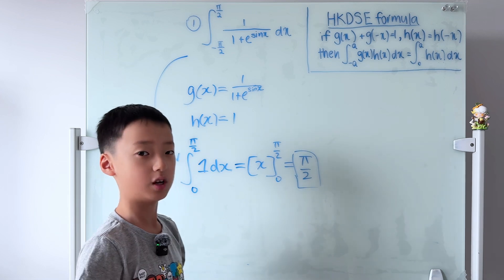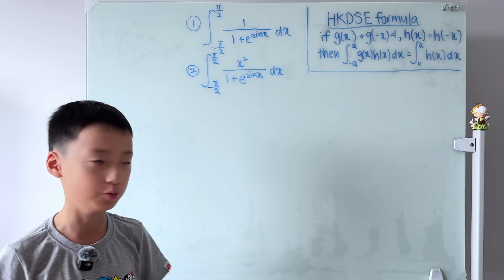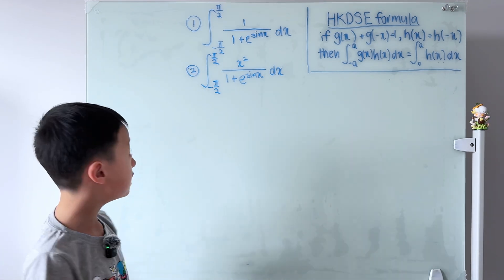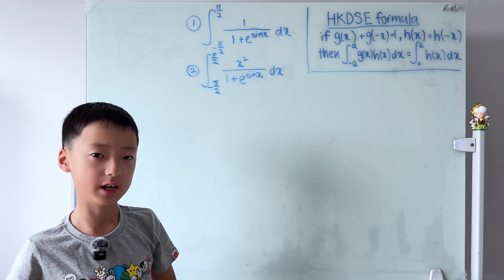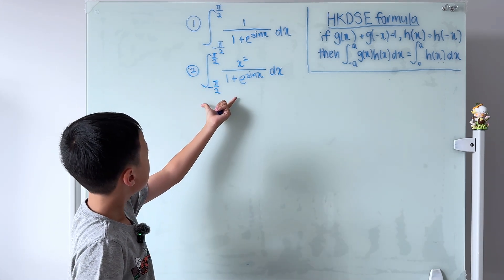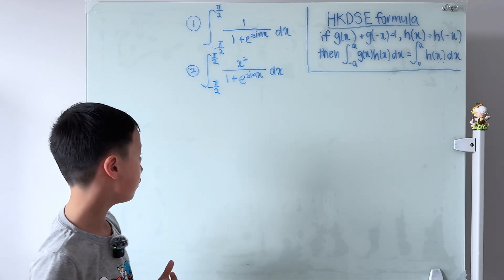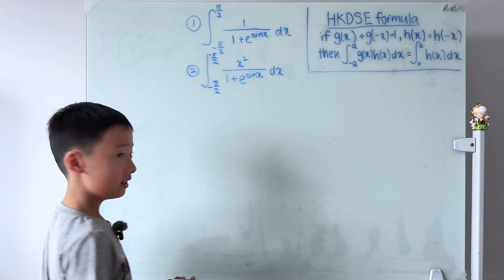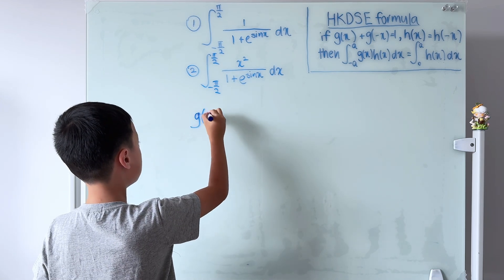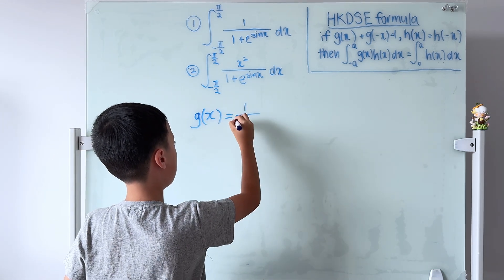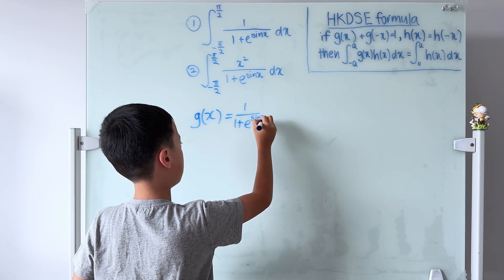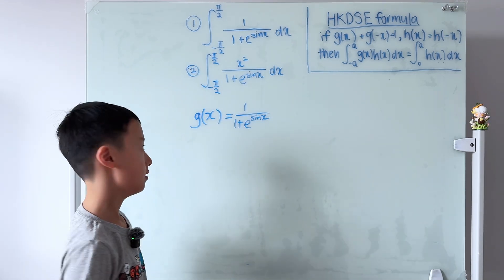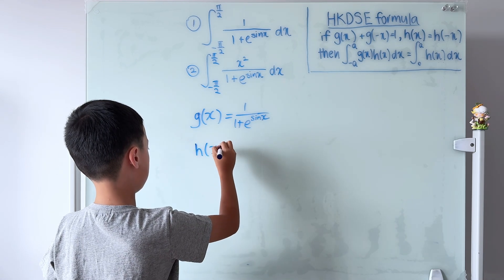That's the answer to Question 1. Now I'll solve Question 2. Recalling from Question 1, we let g(x) = 1/(1 + e^(sin x)). Question 2 also has 1/(1 + e^(sin x)), so we let g(x) equal the same thing. We don't need to re-test it since we already proved it was suitable.